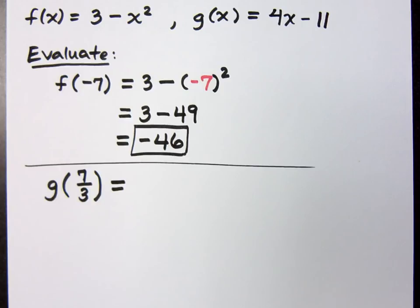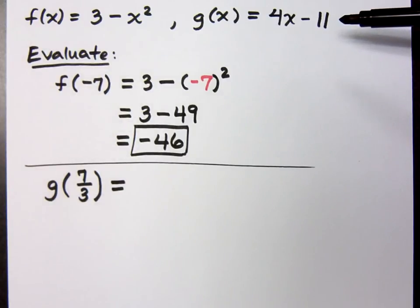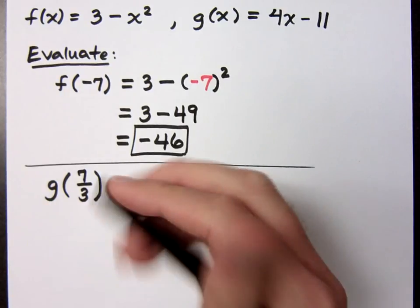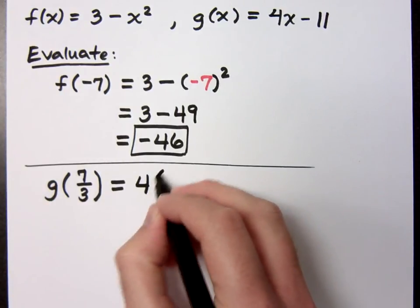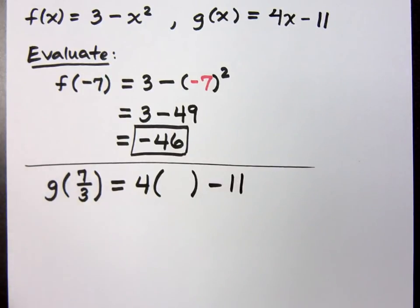G of 7 thirds. What are you going to do for G of 7 thirds? I'm going to replace the X with 7 thirds. Notice I gave you two functions up here, right? Yes. Which one am I going to use? Use the G that you'd be. So, I'm going to use parentheses for the X. Now, minus 11. Always do it this way, and you'll be in good shape.